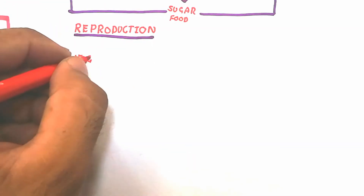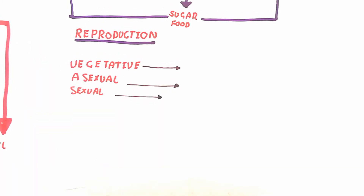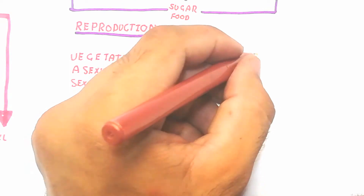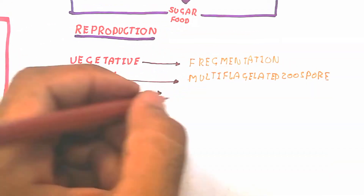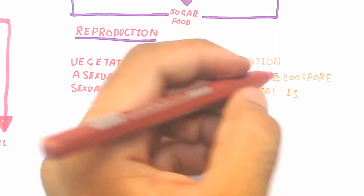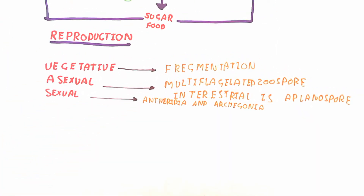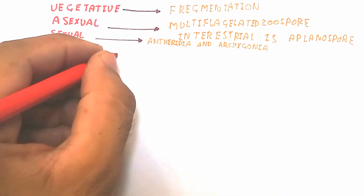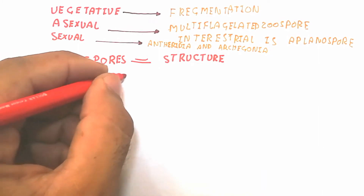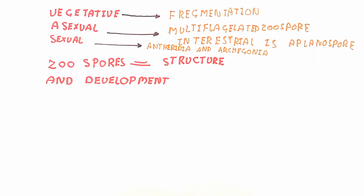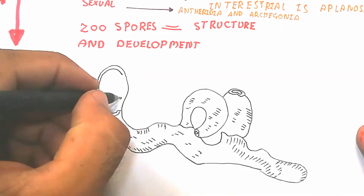Now we will talk about reproduction: vegetative reproduction, asexual reproduction, and sexual reproduction. Vegetative reproduction occurs by fragmentation. Asexual reproduction involves multi-flagellated zoospores — in terrestrial conditions, aplanospores are produced; in water, zoospores are produced. Antheridium and oogonium are present for sexual reproduction.